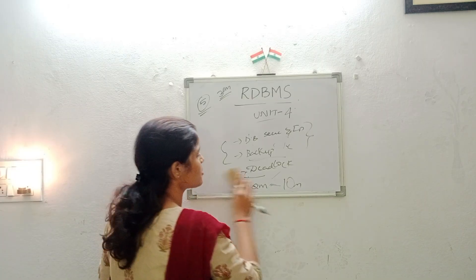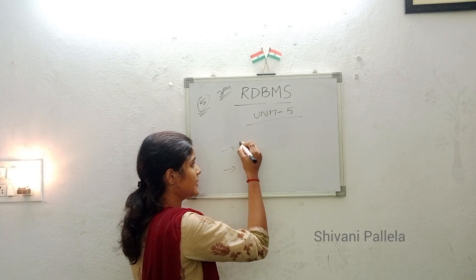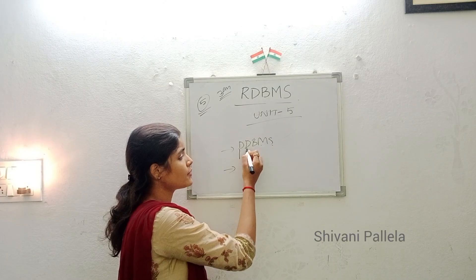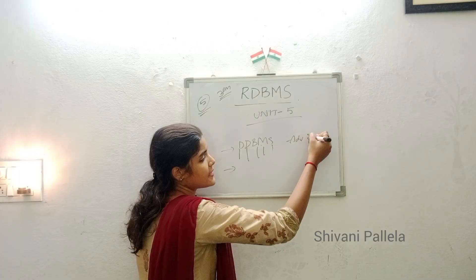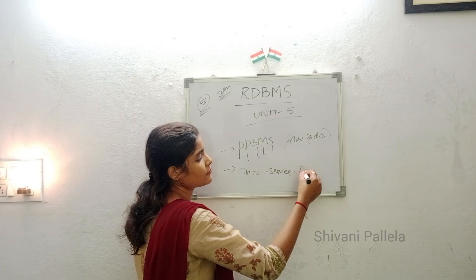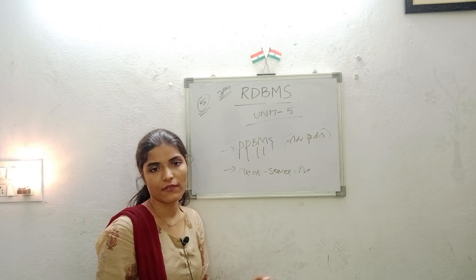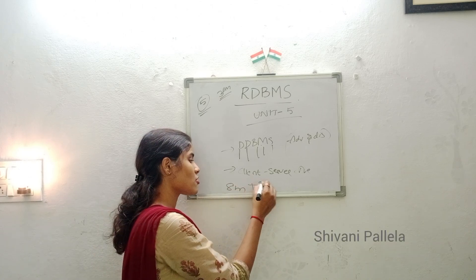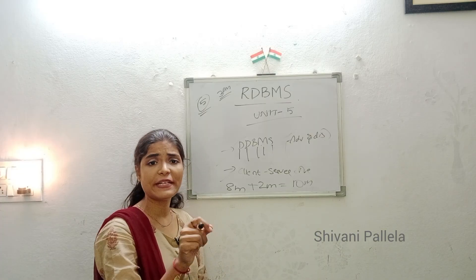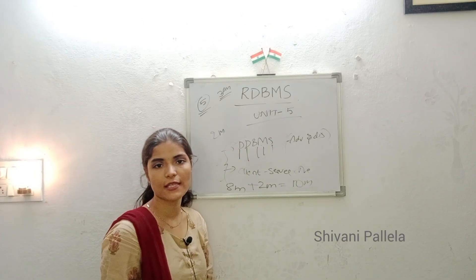Now unit five, the last unit of RDBMS. Here I have given only two questions. First, DDBMS — Distributed Database Management System — including its advantages and disadvantages, which is an important question. The second important question is client-server architecture. If you learn these two questions from unit five, you can definitely attempt one long question for eight marks and one short question for two marks, totaling ten marks. Data fragmentation is not important for long answers — it may appear as a two-mark short question only.